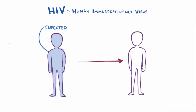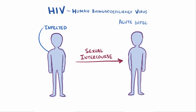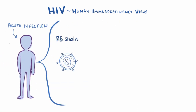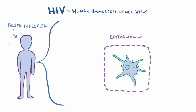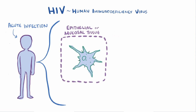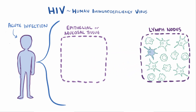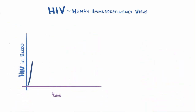Starting with HIV entering the body through sexual intercourse during acute infection, the R5 strain of HIV, which binds to the CCR5 co-receptor, gets into macrophages, dendritic cells, and T cells. Dendritic cells in the epithelial or mucosal tissue capture the virus and migrate to the lymph nodes. The R5 strain then has a field day infecting T helper cells, macrophages, and more dendritic cells, leading to a big spike in HIV replication and the amount of virus found in the patient's blood. Patients typically experience flu-like or mononucleosis-like symptoms during acute infection.